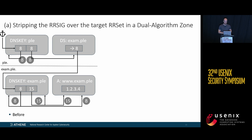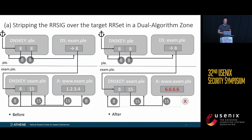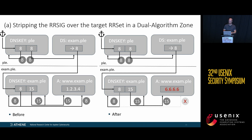Using attack vector A, the situation looks different. In the child zone, the signatures covering the target records have been stripped off from the perspective of the resolver. Only the unsupported algorithm 15 remains, and the resolver is thus forced along that unsupported validation path.